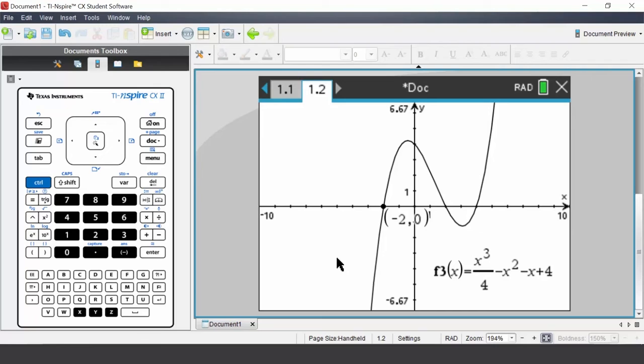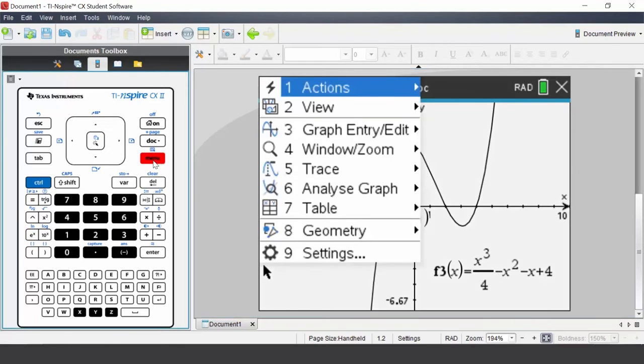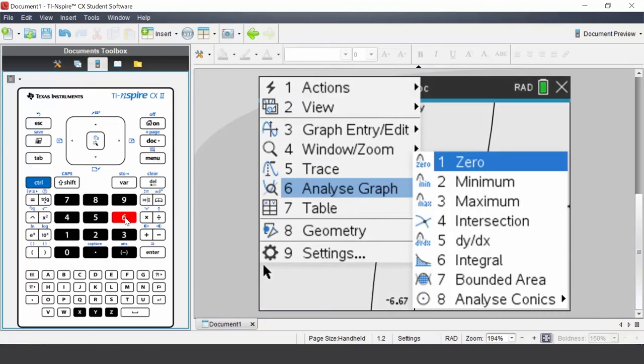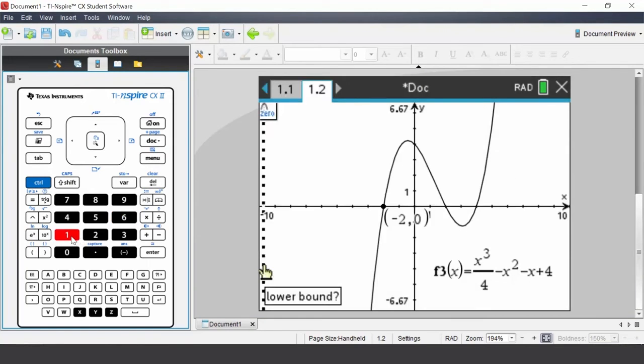Let's solve the zero that looks like X being 4. Press menu, select analyze graph, select zero. Let's enter the lower and upper bounds.